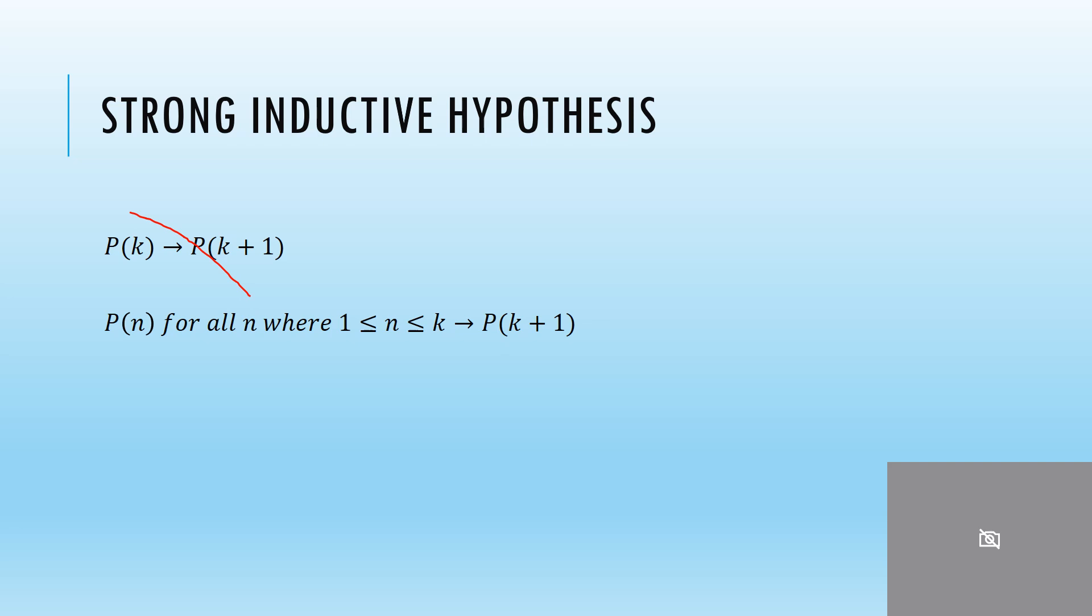Instead we assume that something holds for all n between one and some number k. If this is true then we try to show that the property holds for k plus one. And if we are successful we have used strong induction to prove a universal statement about an ordered set.